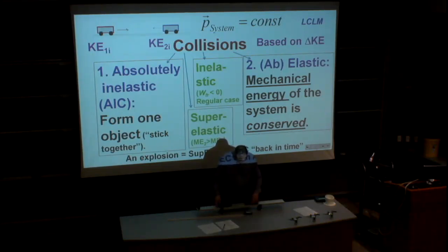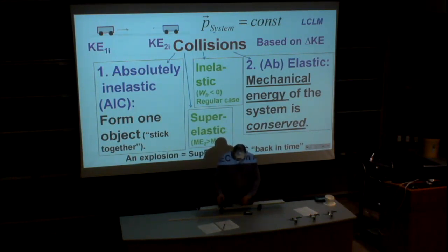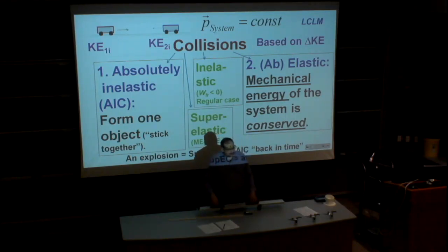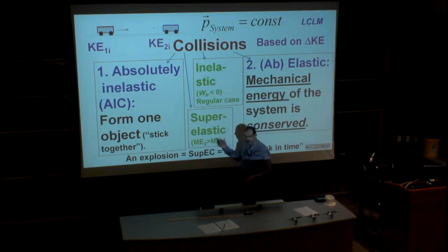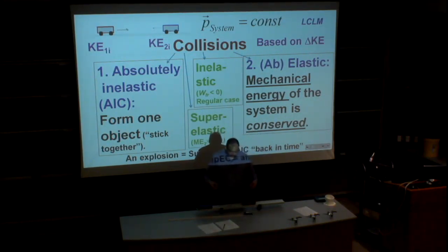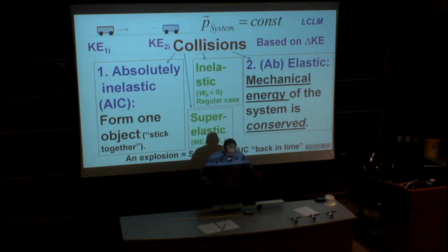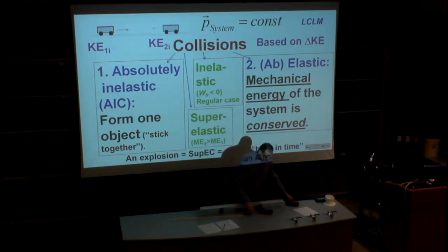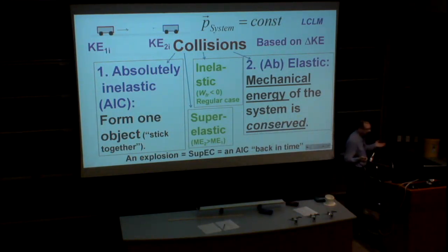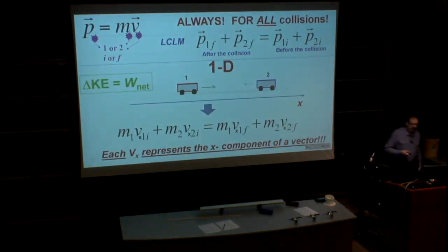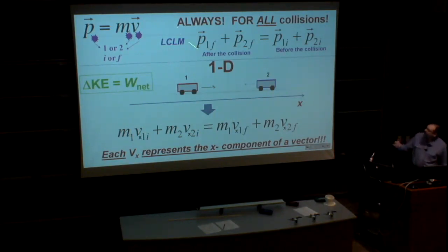Also, something like this can happen: if we cannot neglect friction, energy changes — we call it just an inelastic collision. And something else can happen that looks more like an explosion — we call it a superelastic collision. In this case the system gains extra energy during the collision, so the final energy is greater than the initial energy because of, for example, a spring. These are all possible situations — nothing else can happen. For every situation, we can write the law of conservation of linear momentum.